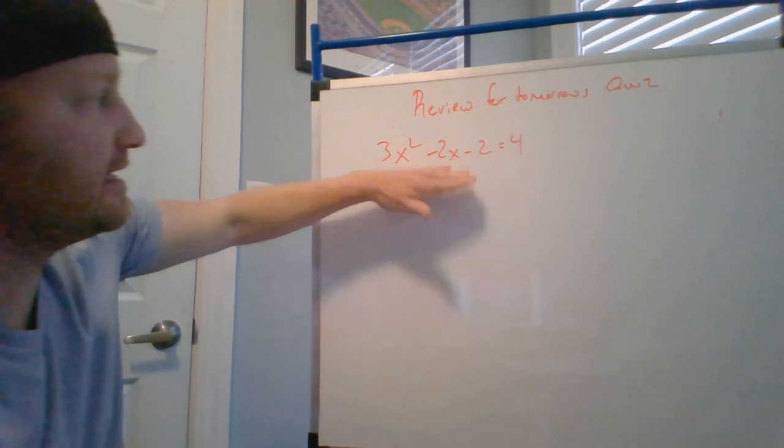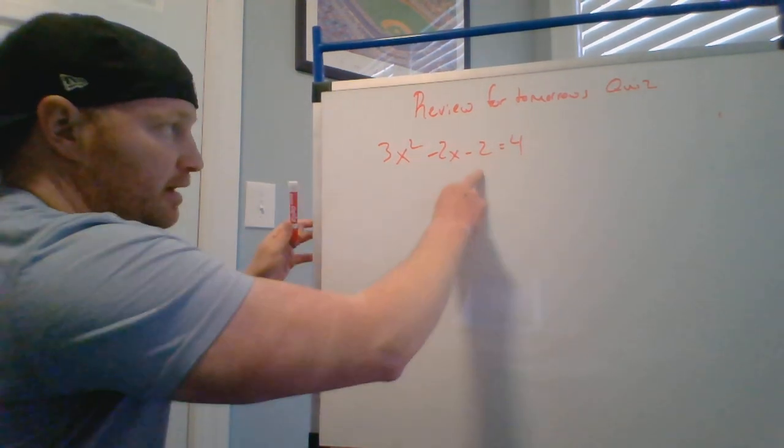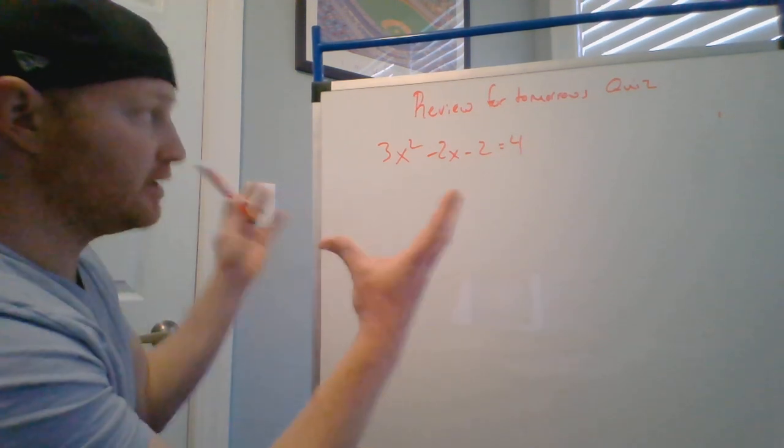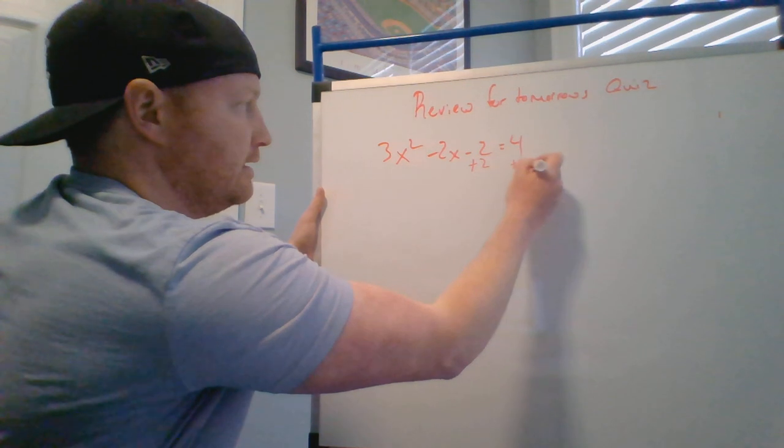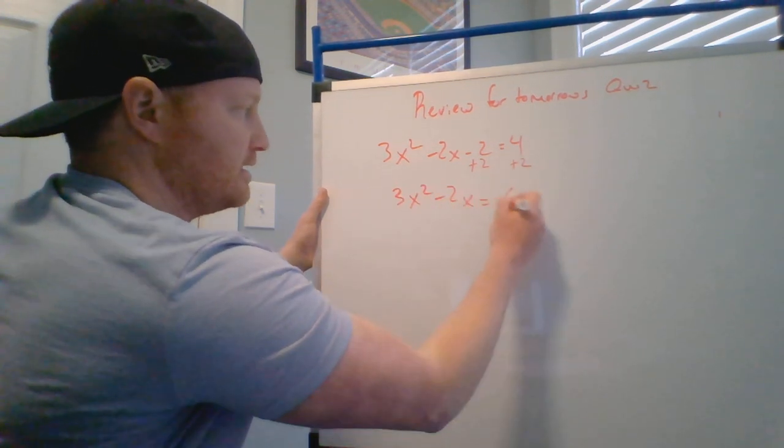All right, next. Last example for today's lesson. Here we go. We're going to do this one now. Again, bring the number to the right side because we're solving, completing the square. We're not solving for vertex. So I'm going to bring my numbers to the right side, and I get 3x squared minus 2x equals 6.